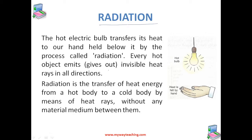The hot bulb also cannot transfer its heat to our hand by convection because the convection currents of air always carry heat in the upward direction, not in the downward direction. So the hot electric bulb transports its heat to our hand by the process of radiation. Every hot object emits invisible heat rays in all directions. These heat rays carry heat energy. When these heat rays fall on a cold object, that cold object receives the heat energy and gets heated.